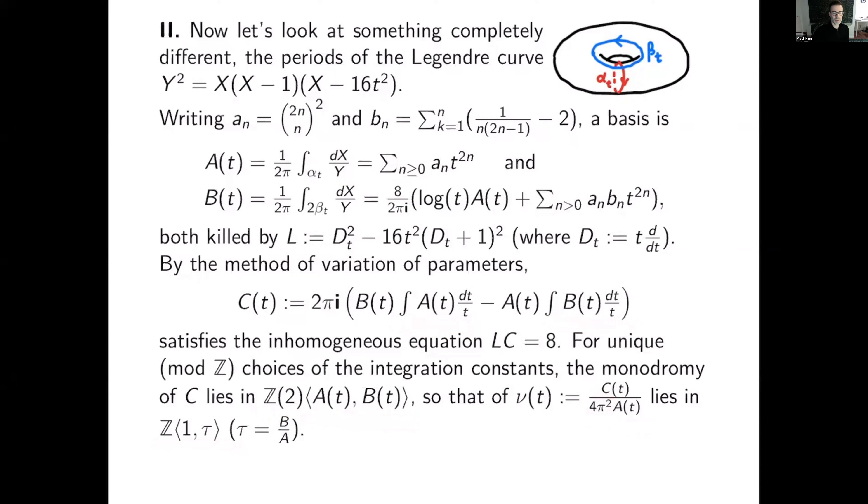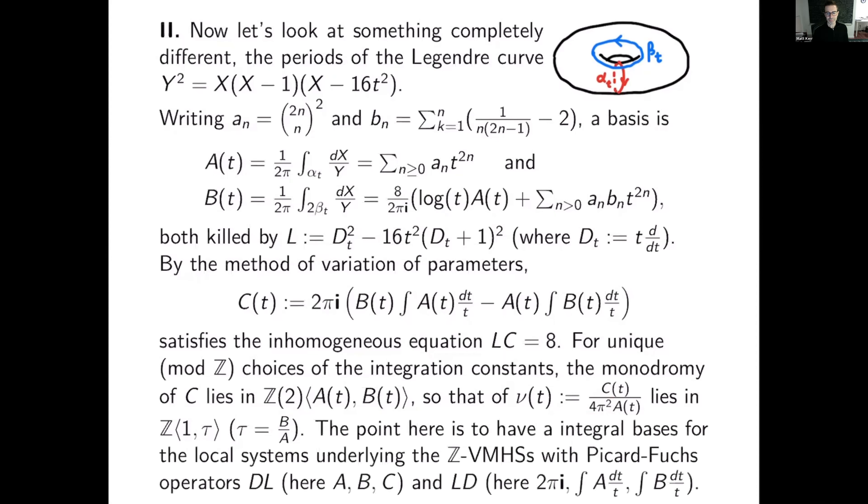So that makes the monodromy of c integral, or rather of nu integral, and you can ask what the meaning of that is. The point abstractly is to have an integral bases for the local systems underlying the Z variations of mixed Hodge structure with Picard-Fuchs operators dL, where d is logarithmic differentiation, kills the constant, dL, so that's a, b, and c, and Ld, which would be two pi i, the integral of a, and the integral of b.